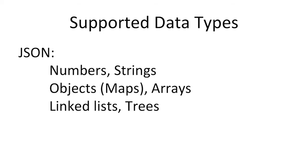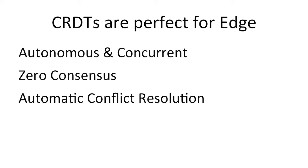This doesn't just work for counters — it works for anything you have in a document database, it works for JSON. In general, you can represent all the nice stuff you have in JSON with CRDTs. These attributes are what make CRDTs a perfect data layer for the edge. Your POPs can run autonomously without needing consensus from, say, San Francisco to New York. Since they're running autonomously, they're implicitly running concurrently, and whenever you have autonomous and concurrent operation you're going to have conflicts — and CRDTs provide automatic conflict resolution.